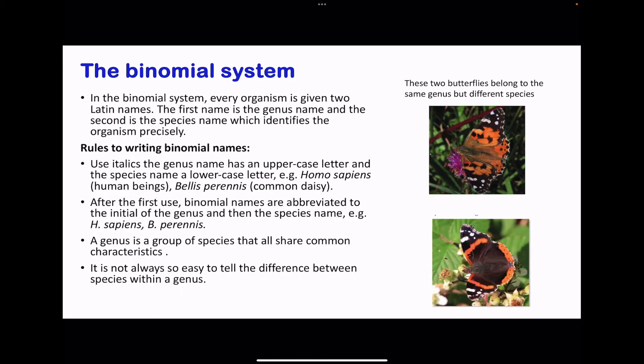Through the process of classification, different groups of organisms can be named using the binomial system, which gives two Latin names. The first name is for the genus and the second name is for the species, identifying that specific organism precisely. The rules: names are written in italics, the first name has an uppercase letter, and the second name does not have an uppercase.